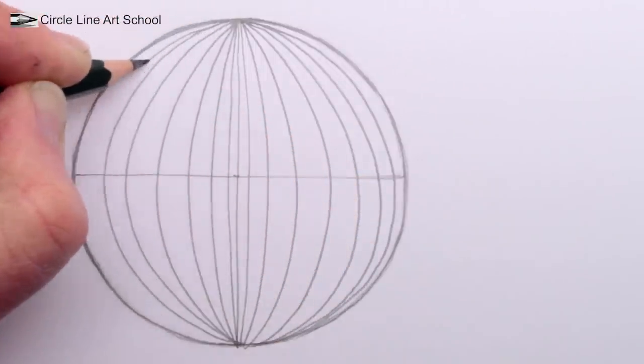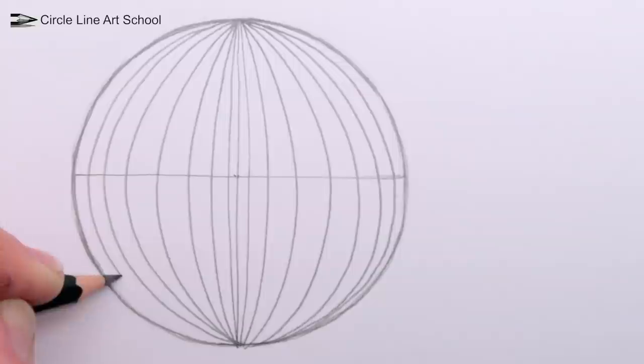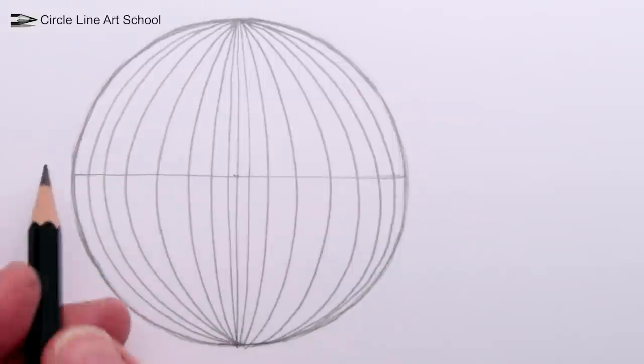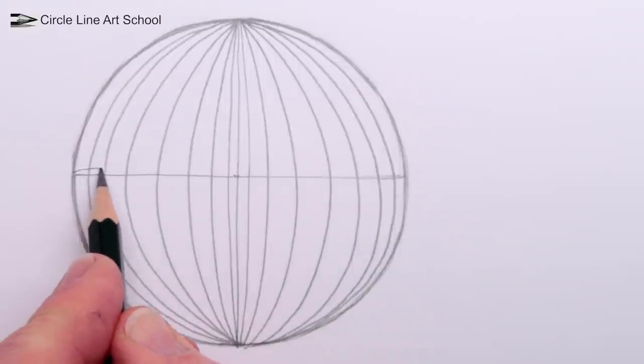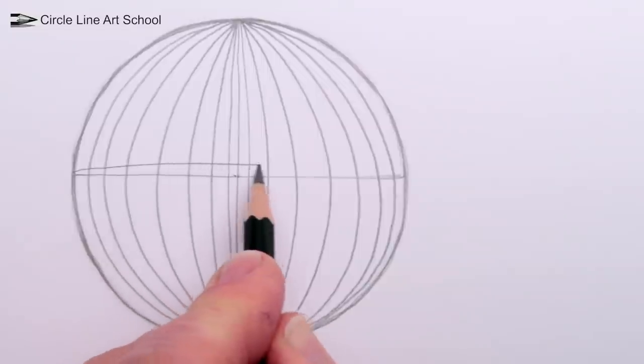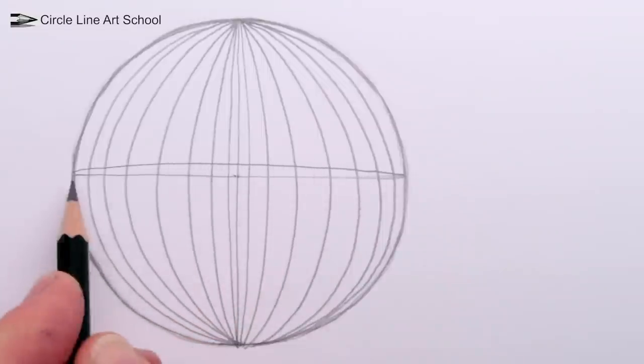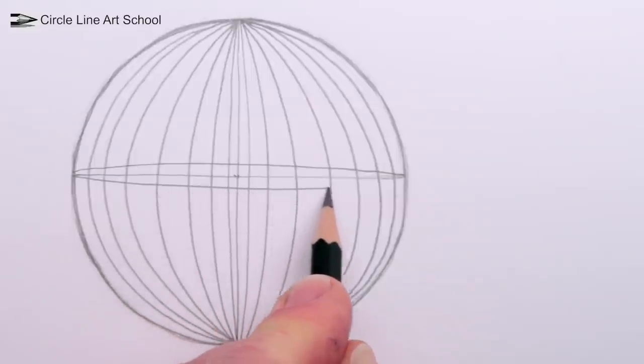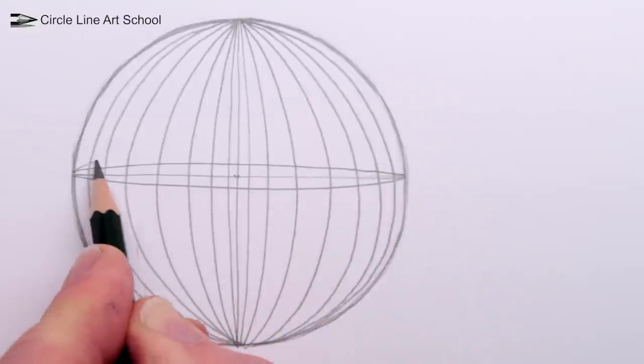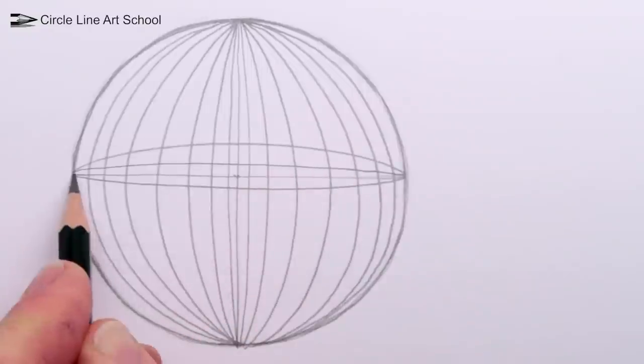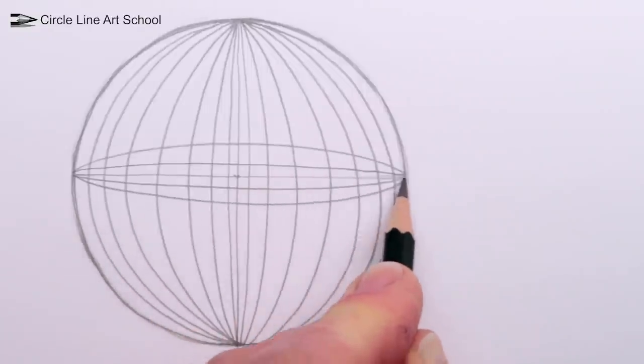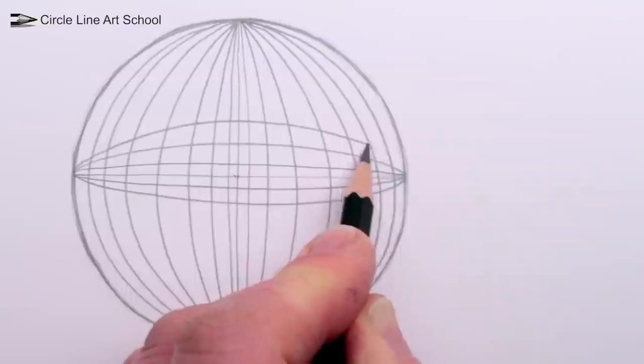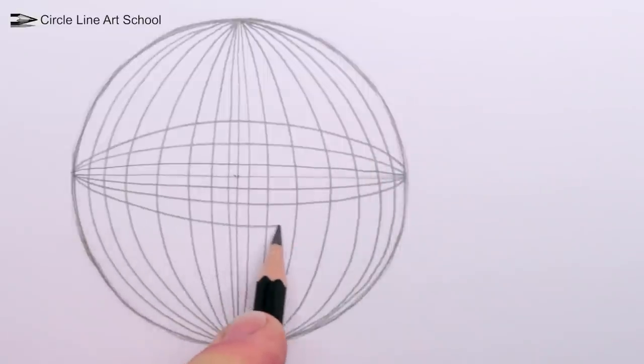Once you've drawn the first set of curves for our curved grid, we can then draw a new set of curves, this time from the left vanishing point to the right vanishing point. Again, the line between the left and the right vanishing point is a straight line, but then as we draw the grid, the lines get more curvy until they echo the curve of the outside of the circle.